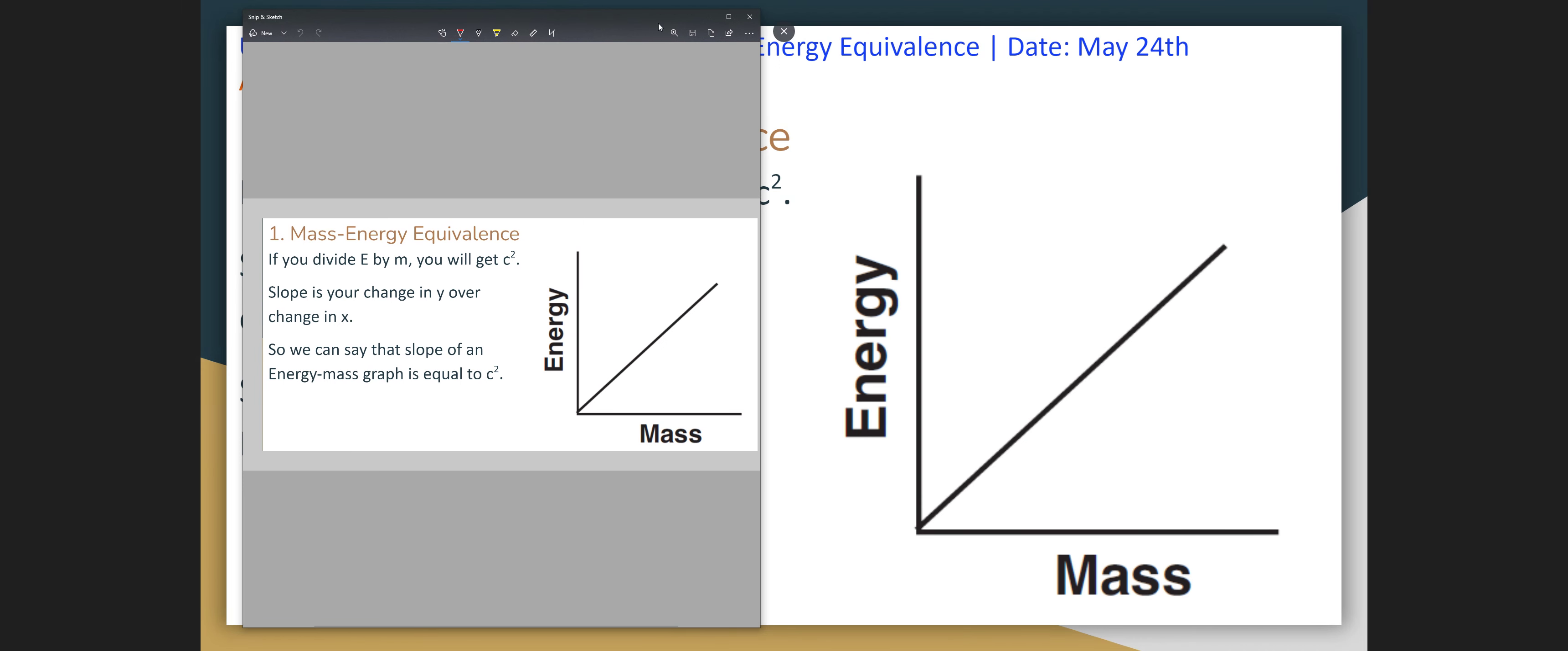I'm just going to write it here. E is equal to mc squared. If you divide by m on both sides, you get E over m. It turns out your slope is y over x. And if your E is on the y-axis and your m is on the x-axis, it turns out c squared is your slope.